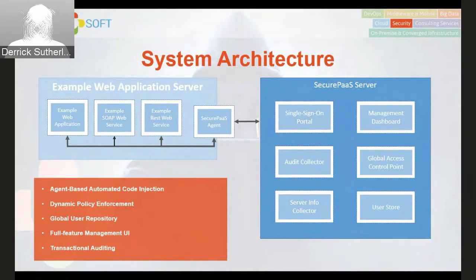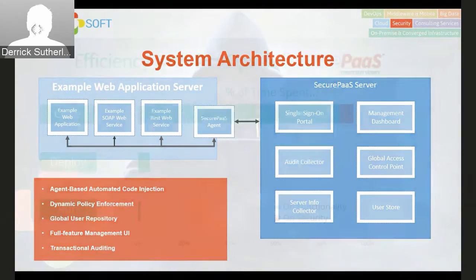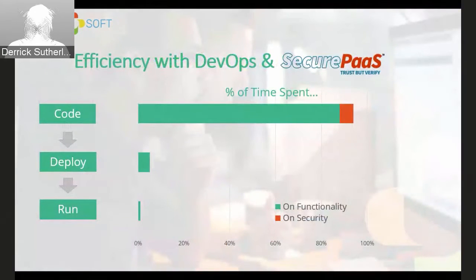This allows us to make changes to your applications and services in seconds rather than weeks or months. The agent talks up to our master server, which has a single sign-on portal, audit collection system, server info collector, a globally shared access control point, a management dashboard, and a user store based on LDAP — supporting Active Directory, OpenLDAP, or your own LDAP store. On OpenShift, SecurePaz can be delivered as a Docker container, allowing you to quickly patch applications deployed in your environment.